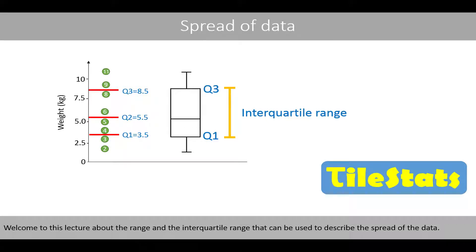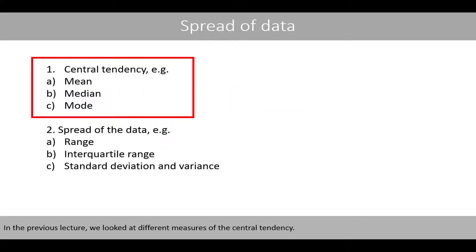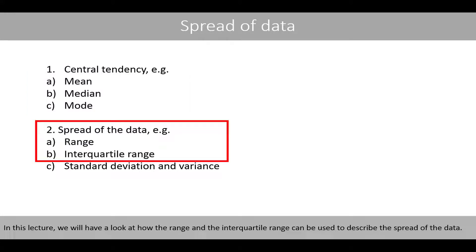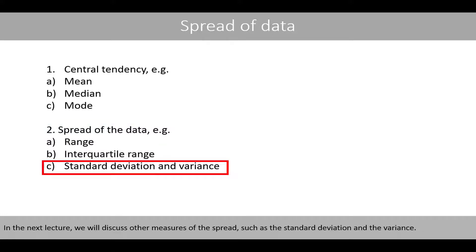Welcome to this lecture about the range and interquartile range, which can be used to describe the spread of the data. In the previous lecture, we looked at different measures of central tendency. In this lecture, we have a look at how the range and interquartile range describe the spread of the data. In the next lecture, we'll discuss other measures of spread, such as the standard deviation and variance.